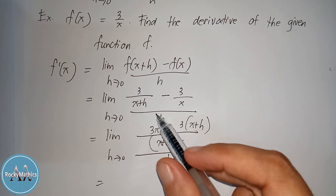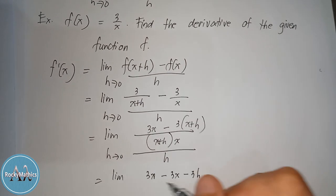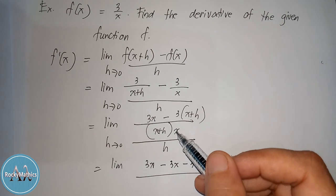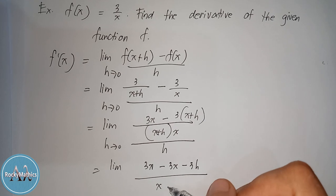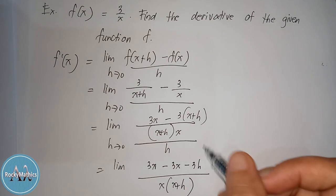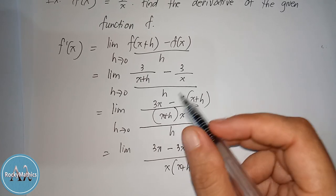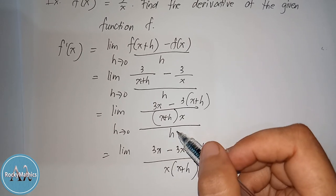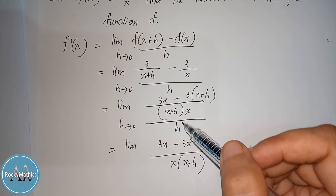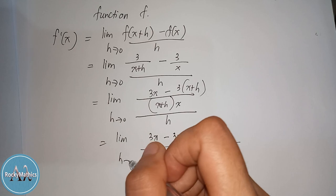Now we need to simplify the whole numerator. This becomes: limit of 3x minus 3x minus 3h, over x times x plus h. Since multiplication is commutative, I will write x here. And since this expression is divided by h, the rule of fractions says to multiply by the reciprocal of h, which is 1 over h. So this is the new expression, as h approaches 0.